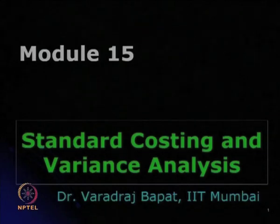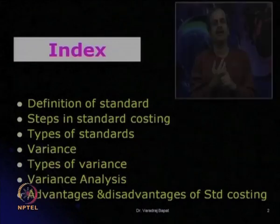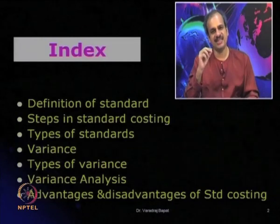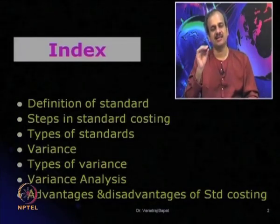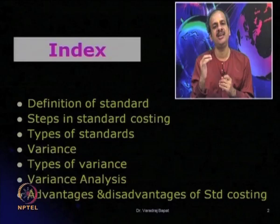Now let us go to the next technique. The next technique we are going to discuss is known as standard costing. I am taking it immediately because there is a linkage between budget and standard costing. Budgets act as a benchmark or a target — in the same manner, standards also act as a benchmark or a target. Standard costing is also used as a control technique. In this module, we are going to discuss standard costing and variance analysis, and also do a few cases. What we are going to cover is: definition of the standard, steps in standard costing, types of standard, variance, types of variances, variance analysis, and the advantages and disadvantages of standard costing.